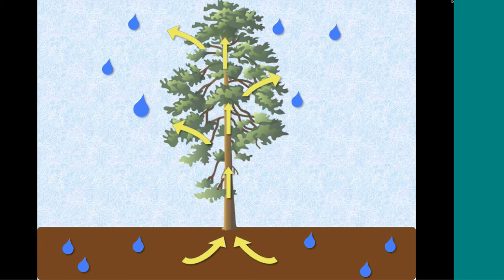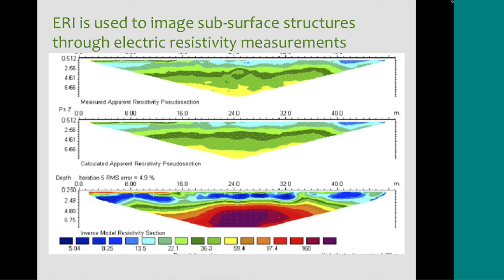With electrical resistivity imaging, we're hoping to get values of electrical resistivity in the soil around a focal tree and try to create these electrical resistivity images. This is just an example that would contour and color code where certain resistivities are throughout the day. The way that water is related to resistivity is that water is very conductive to electricity, so whenever there's higher amounts of water in the soil, there's less resistivity, and lower amounts of water means higher resistivity.